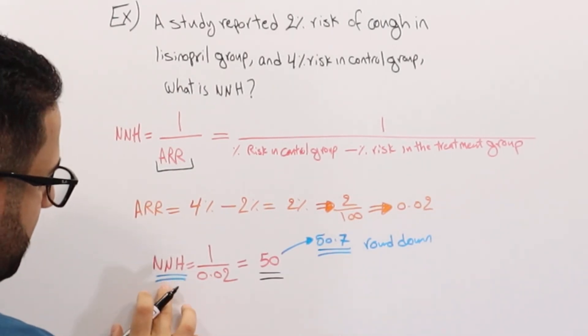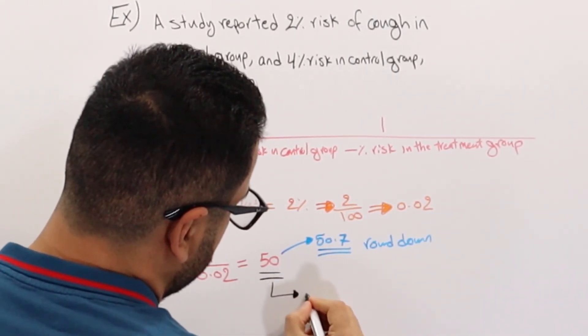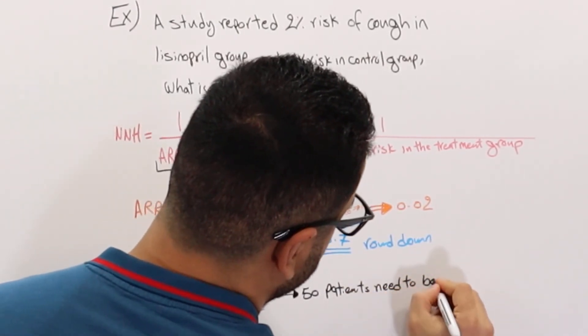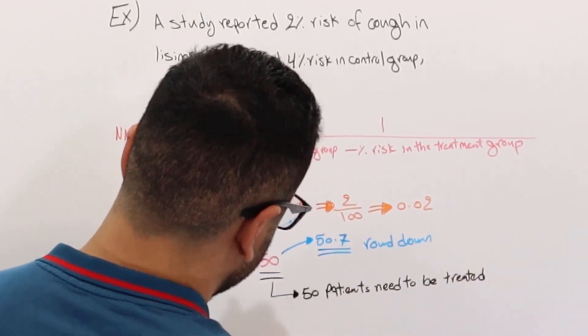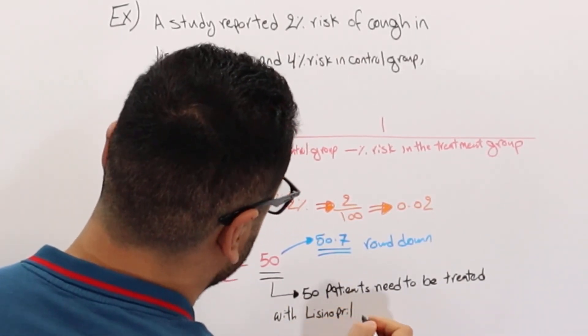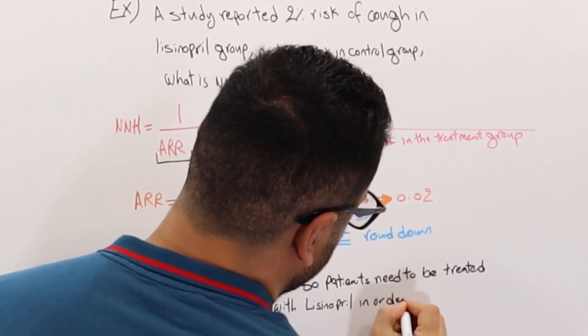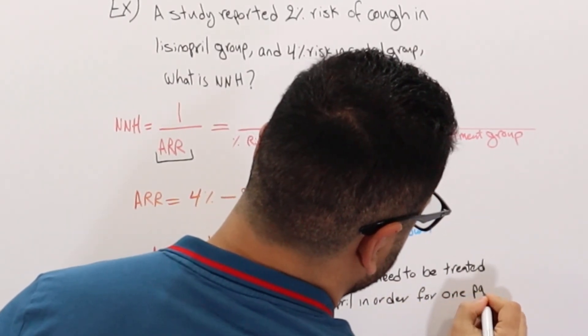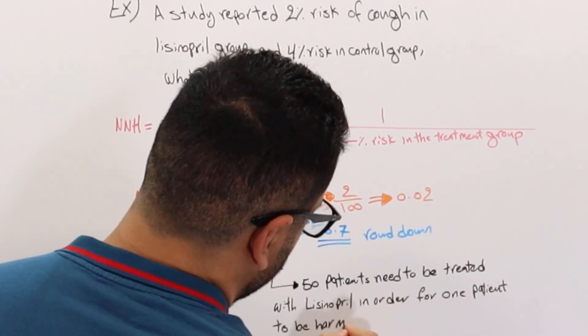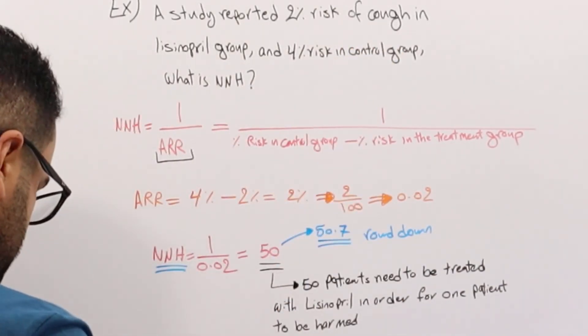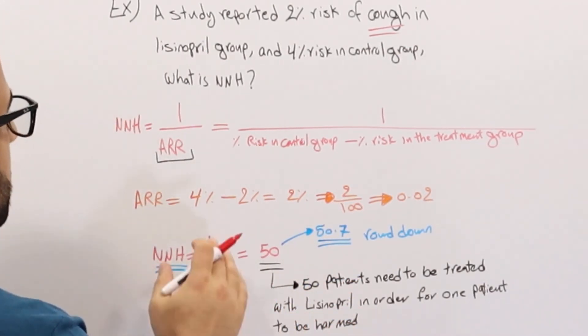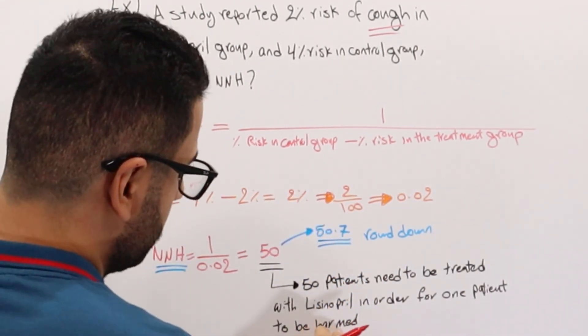Basically, what this means, going back to the definition of number needed to harm, is 50 patients need to be treated with lisinopril in order for one patient to be harmed. In this case, basically that one patient will experience cough. That's what I meant by harm—basically the side effect. So every 50 patients we're going to be treating with lisinopril, only one patient is going to experience the cough.